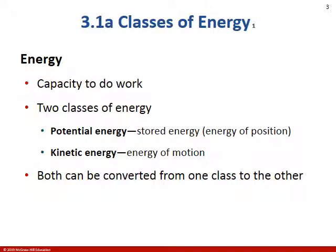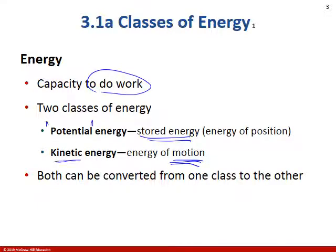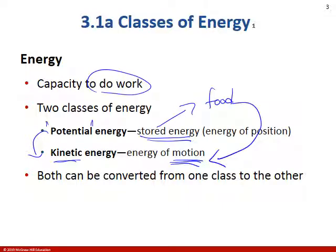Energy's basic definition is the capacity to do work. We have different classifications of energy: stored energy is potential energy, and the energy of motion is kinetic energy. You can convert from potential to kinetic — for example, can we take stored food energy and turn it into motion? Can we use the food we eat to help our muscles contract so we can move? Most of us would say yes.